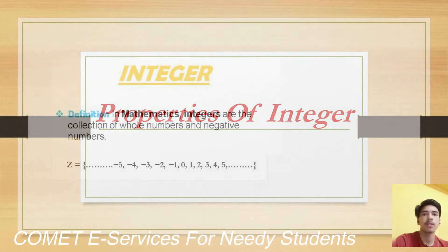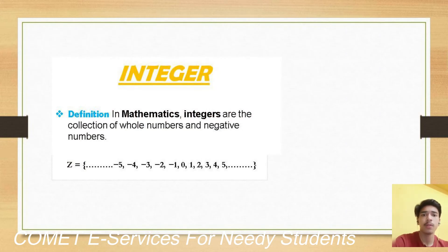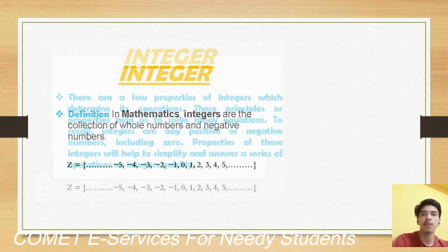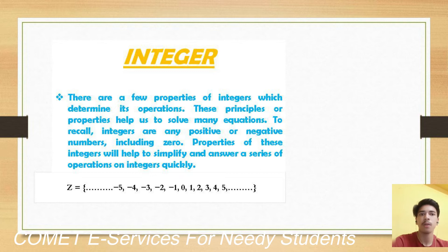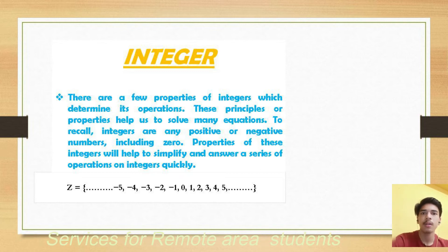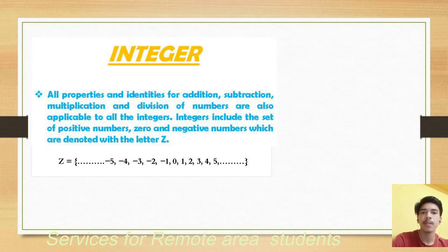First I will recall you about what are integers. Integers are any positive or negative number including zero. As an example, I am taking minus one, zero, and one, which are integers. There are few properties of integer which determine its operation — all properties and identities for addition, subtraction, multiplication and division are applicable to all integers. Integer includes the set of positive numbers, zero, and negative numbers, which are denoted by capital letter Z.